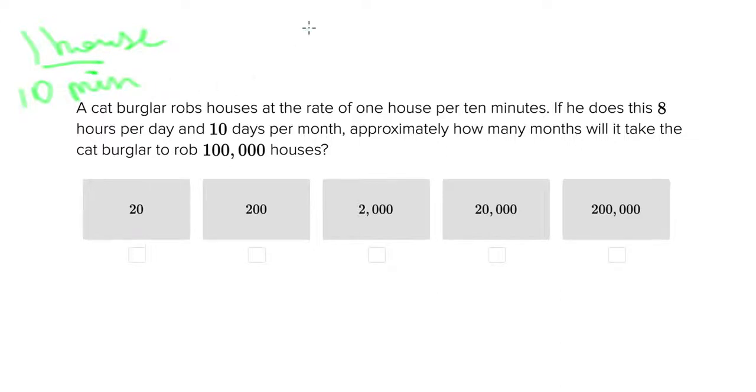Then you figure out what the final answer should look like. If he does this 8 hours per day and 10 days per month, approximately how many months will it take the cat burglar to rob 100,000 houses? What we're worried about here is getting this rate to be one over months so that we can figure out how many months have gone by to have 100,000 houses.